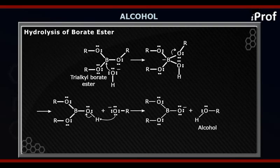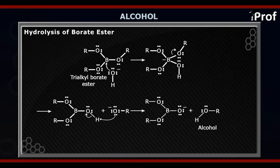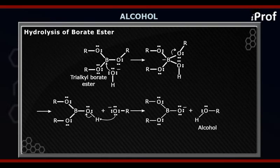We have now got two molecules of alcohol. We get three molecules total because three alkene molecules were used in the hydroboration step. In the third and final step, OH⁻ from NaOH or KOH will attack on the remaining molecule, which is B(O⁻)₂OR, releasing the third alcohol molecule.